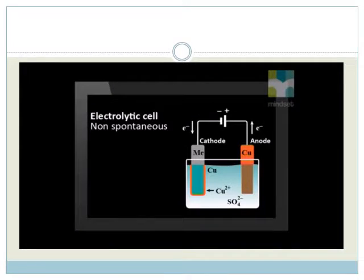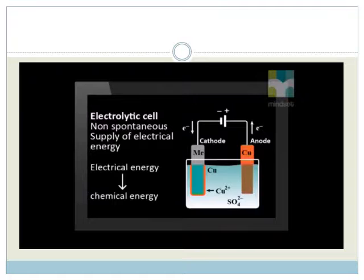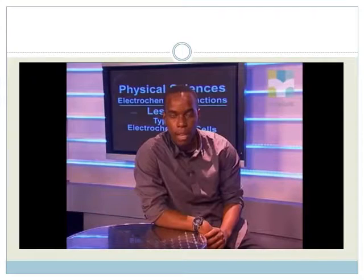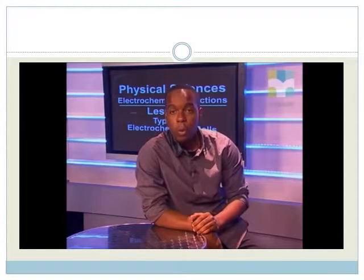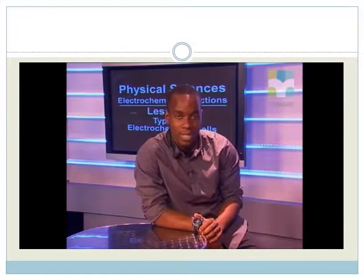The second type of cell is a non-spontaneous reaction that occurs in electrolytic cells. The electrode reactions are sustained by a supply of electrical energy. In this cell, electrical energy is converted to chemical energy. An example of an electrolytic cell is molten sodium chloride that is electrolyzed to form liquid sodium and chlorine gas. Let's join Simbolelo and Nombulelo to show us the difference between these two cells and the links between electricity and chemistry.